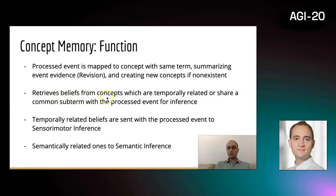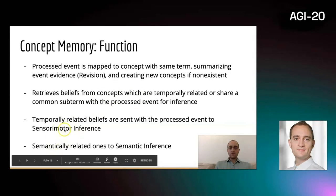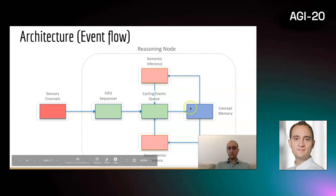It retrieves beliefs from concepts which are either temporally or semantically related and passes them on for inferences. Both the temporal and semantically related beliefs are passed on together with the event we took out from the cycling events queue. They are passed on to semantic inference or sensorimotor inference, dependent on whether it's a temporal relationship or based on a common subterm.